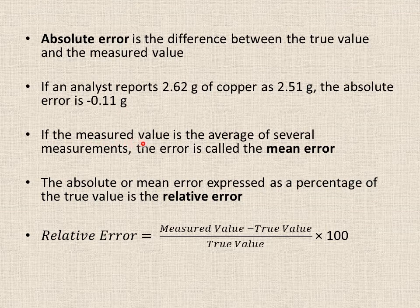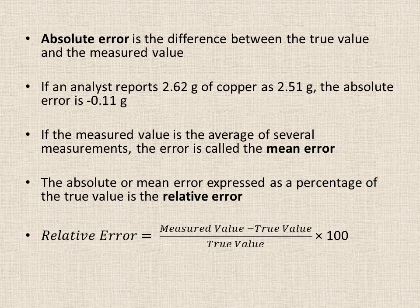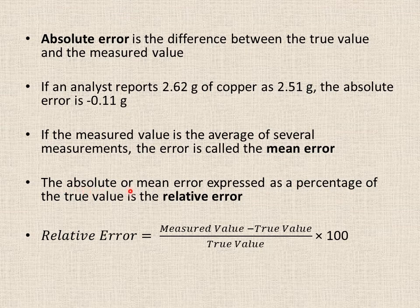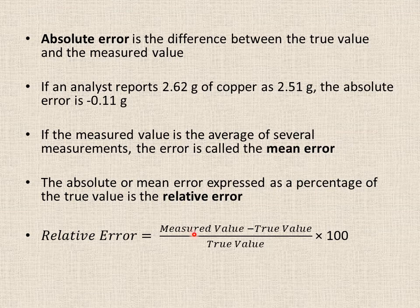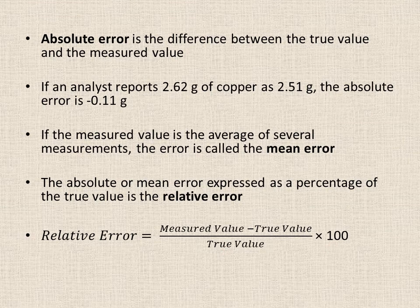If the measured value is the average of several measurements — for example, running an experiment in replicates three or five times and then taking the average — the error calculated is called the mean error. The absolute or mean error expressed as a percentage of the true value is known as relative error, also called percentage error.